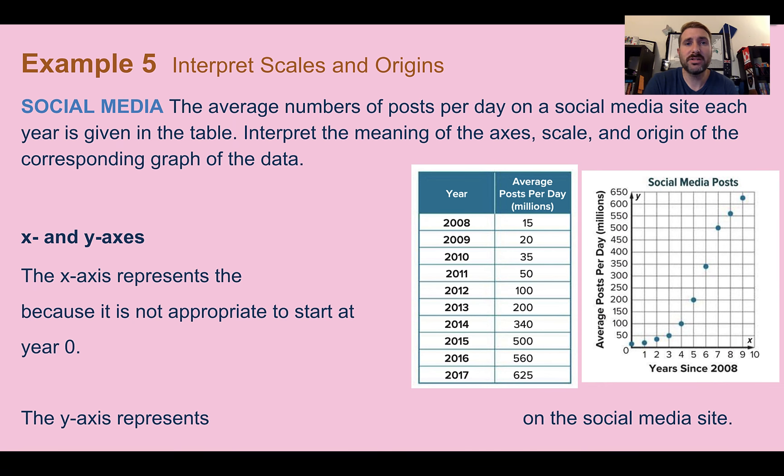Example 5, interpret scales and origins. Our real context here is social media. The average numbers of posts per day on a social media site each year is given in the table. Interpret the meaning of the axes, scale, and origin of the corresponding graph of the data. So first, let's interpret the meaning of the axes. The x-axis represents the years since 2008. That's what's labeled down here. Again, like in our last example, we have to say years since 2008 if we're starting in 2008.